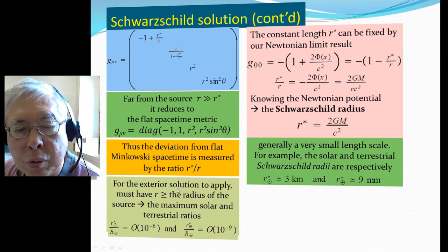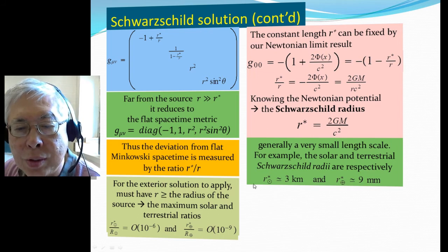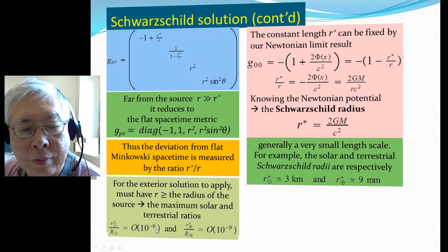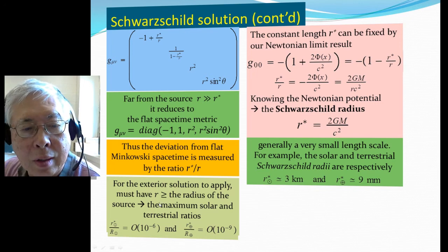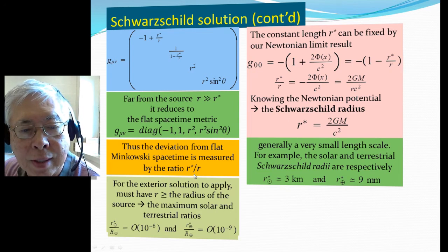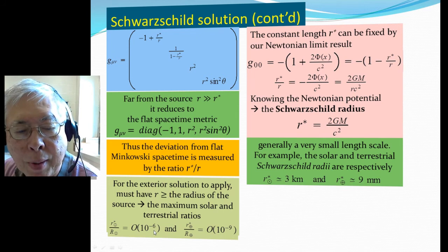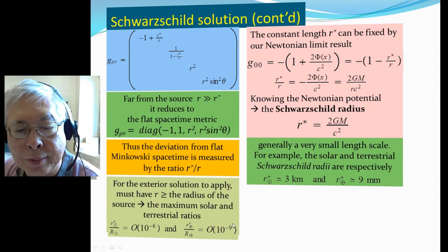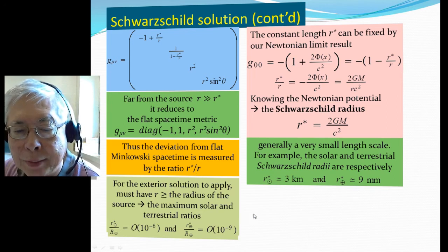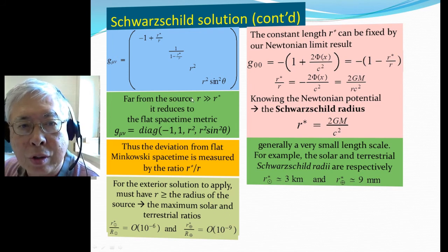Of course, for an exterior solution, you must have r greater than the radius of the source. So the smallest you can get for this ratio, for example for the sun, the solar radius plugged in gives one part in a million. And this ratio for the earth is one part in a billion. So therefore this correction is tiny.